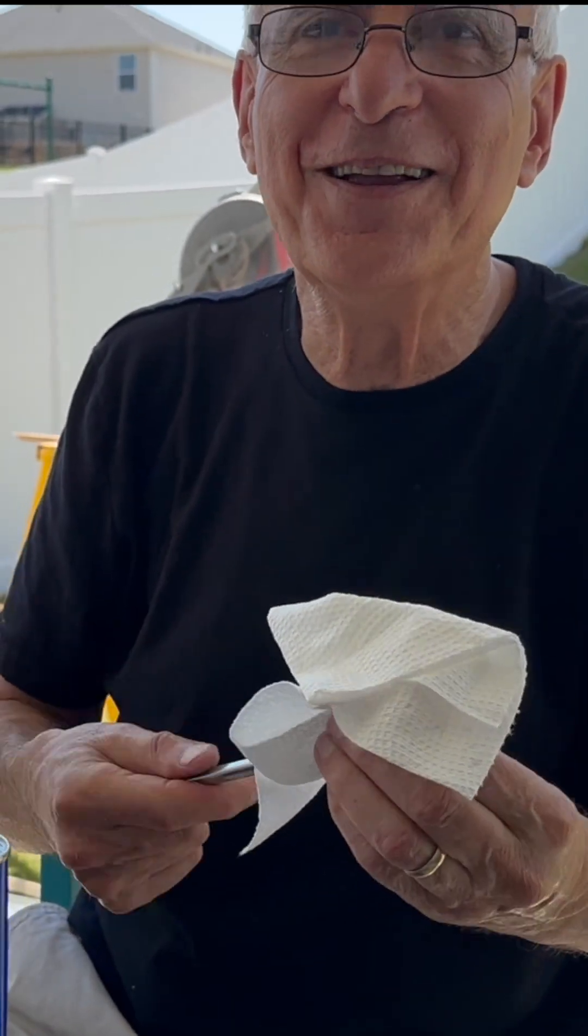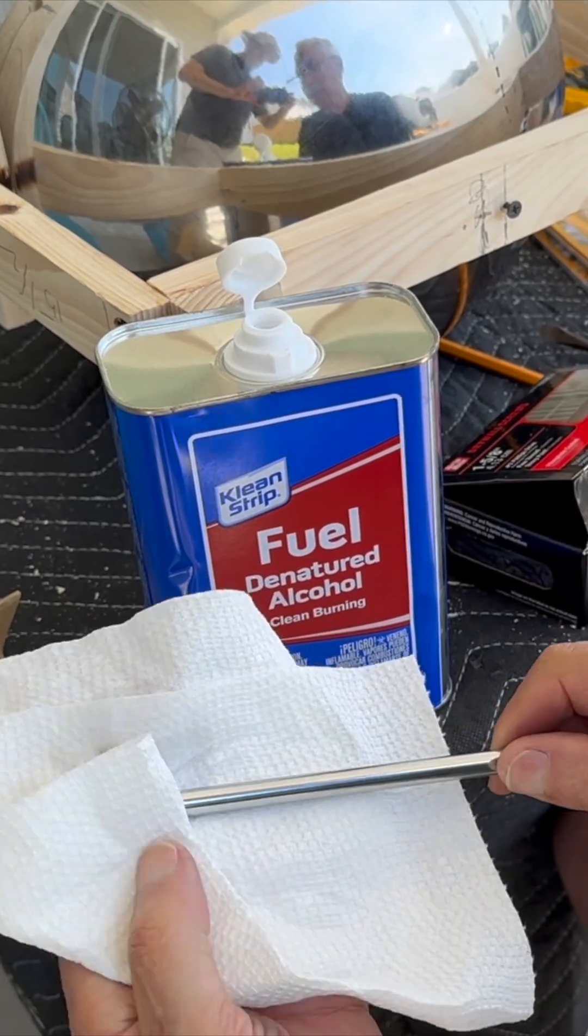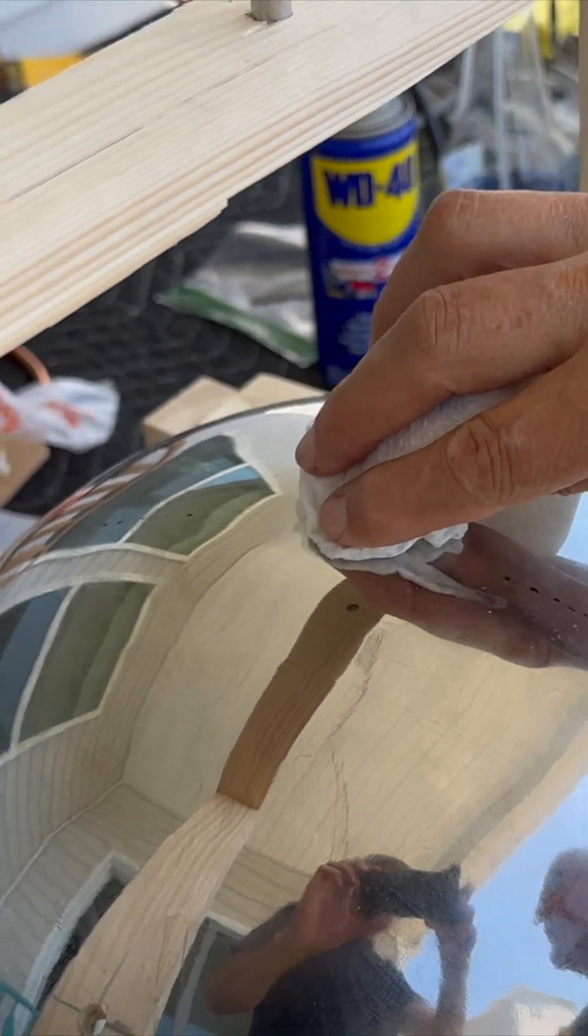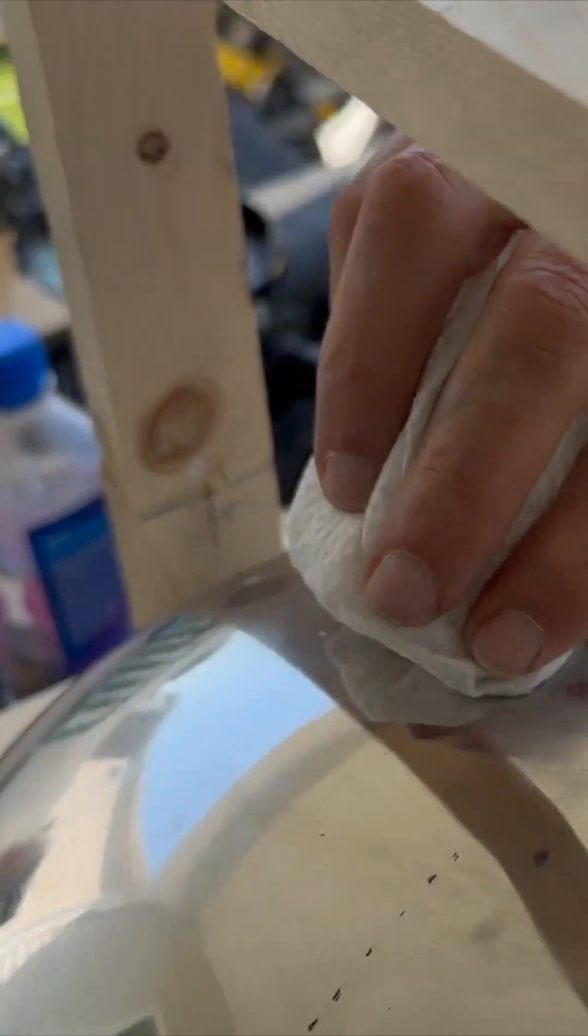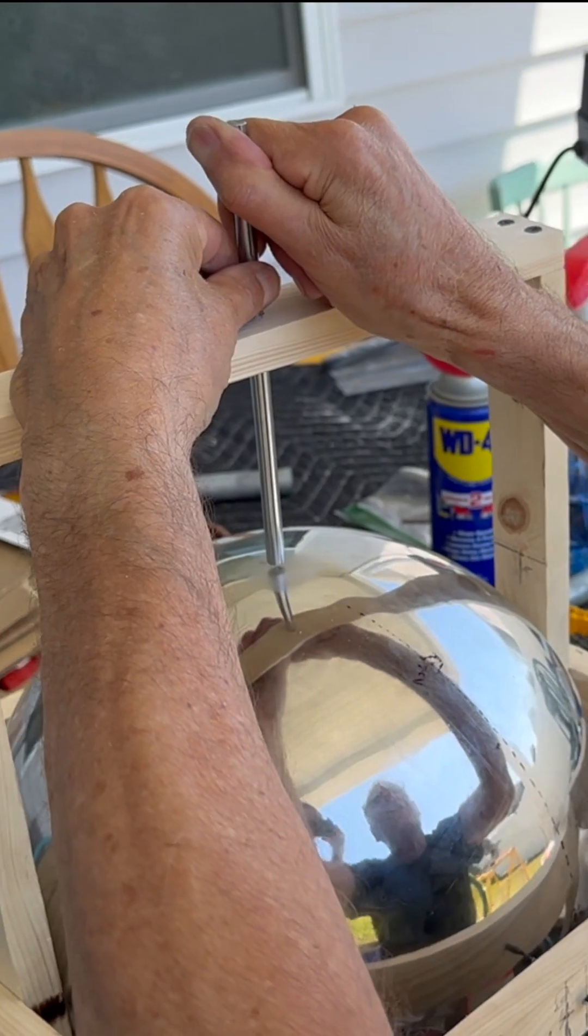It got denatured because it evaporates really quickly. And if there's any fingerprints, oil from our skin or anything like that, we don't want anything to interfere with the brazing. That's good. There we go.